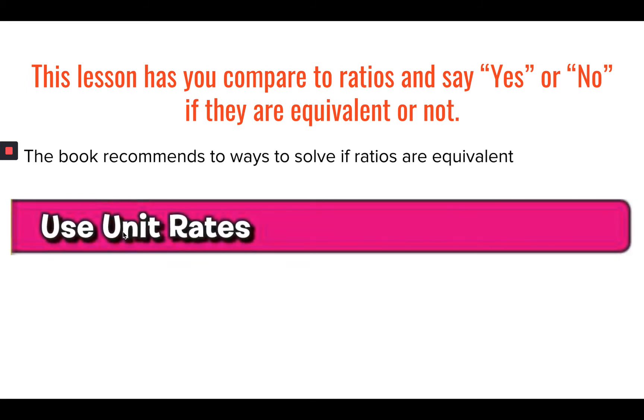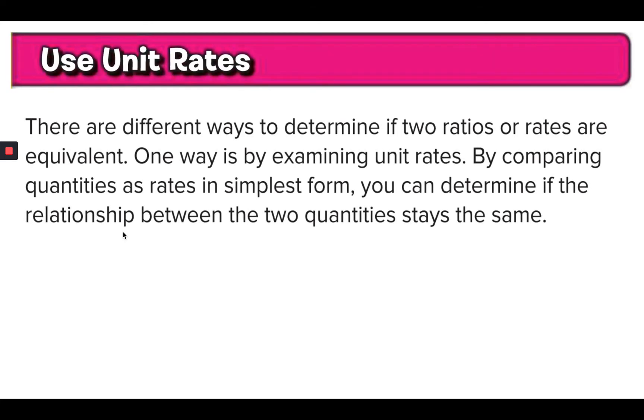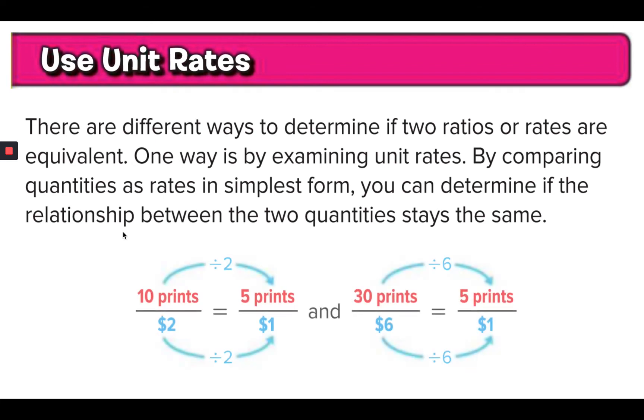And the first way is looking at making each ratio a unit rate. So the first way the book recommends to solve these is by making each ratio into a unit rate. So what this says is basically by comparing quantities as unit rates, which is the simplest form, you can determine if they are the same.